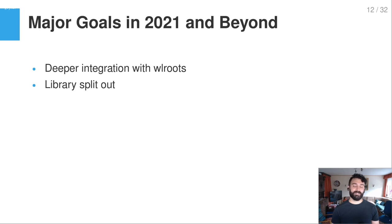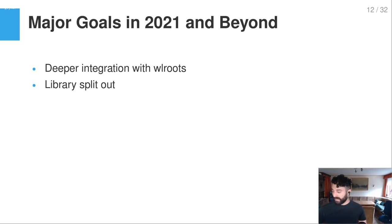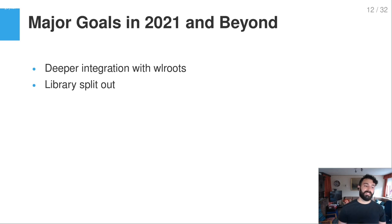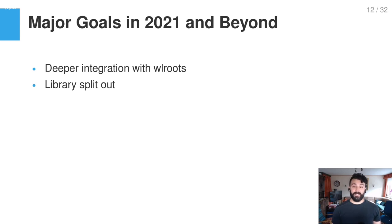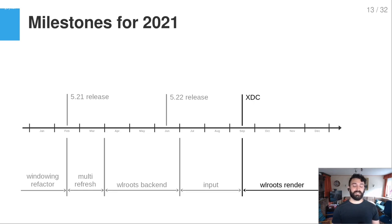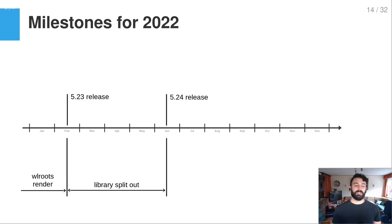The major goals for 2021 and beyond are: first, deeper integration with wlroots — I'll cover that in tomorrow's talk. Second, the library split-out. Join the talk tomorrow about the wlroots backend for what deeper wlroots integration means. After XDC I want to start with the wlroots renderer and continue with the October release, and then afterwards really start with the library split-out.